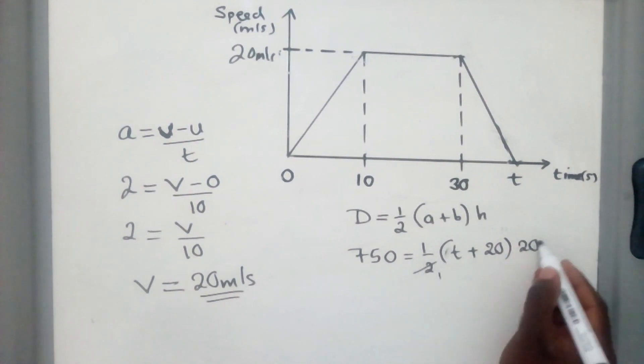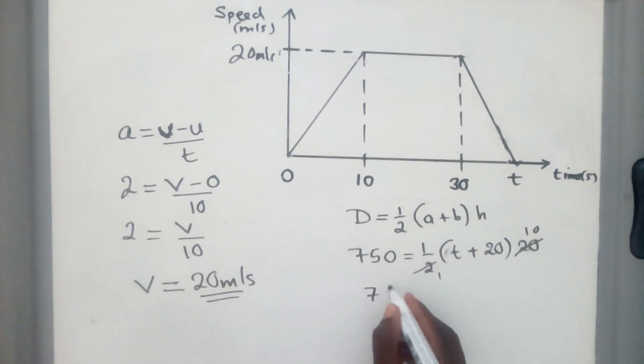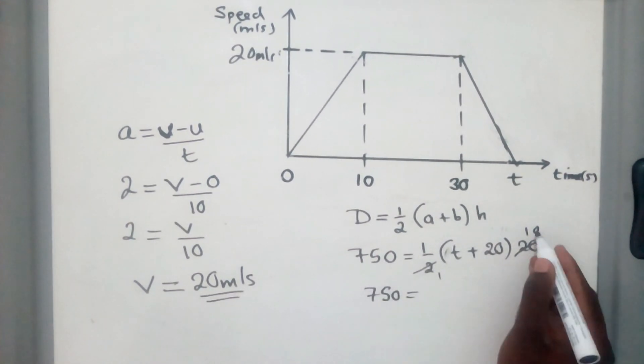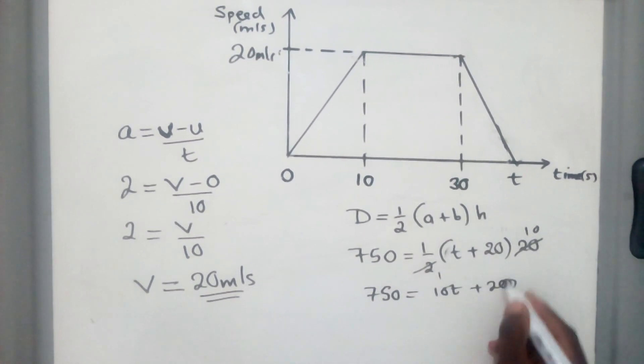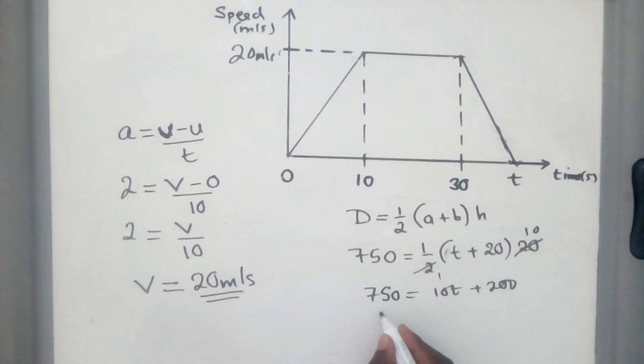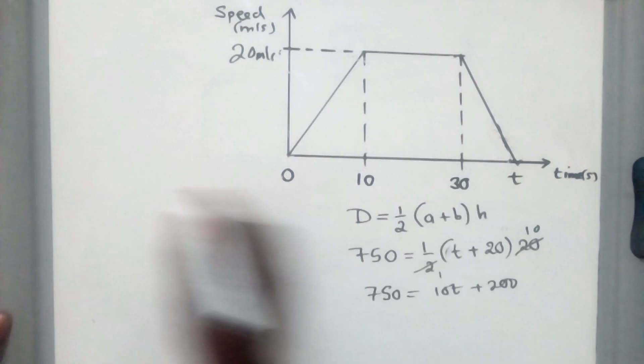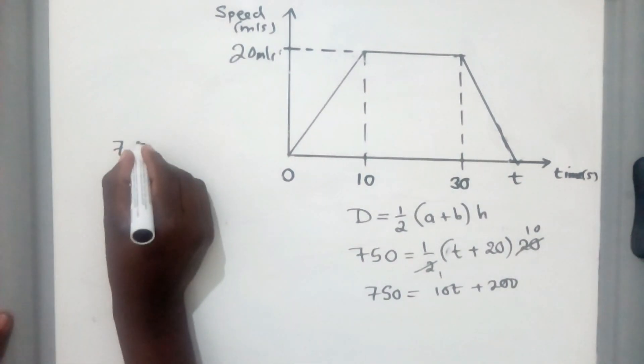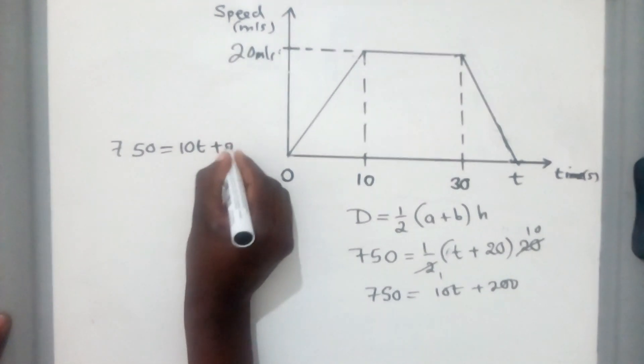So here, 2 into 2, 1, 2 into 20 is 10. You can now distribute 10 multiplied by t is 10t. 10 multiplied by 20 is 200. So group the like terms. Let me use this part here. So we have 750 is equal to 10t plus 200.